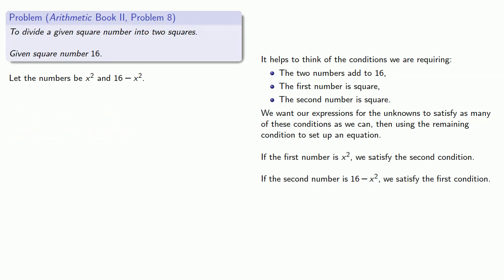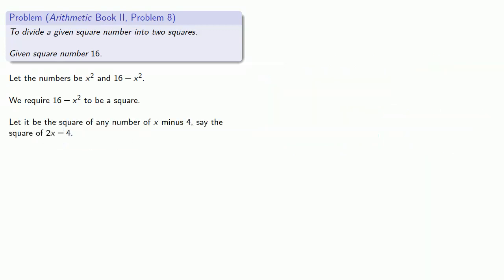By our choice of variable expressions, we've satisfied two of the three requirements. We just need to satisfy that third requirement, so we require 16 minus x squared to be square. This is the point where solving a Diophantine equation is an art more than a science. We want 16 minus x squared to be a square, and so Diophantus says: let it be the square of any number of x minus 4, say the square of 2x minus 4.